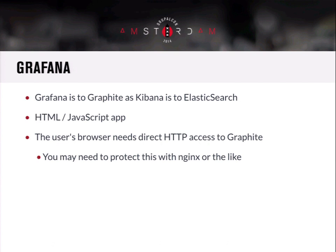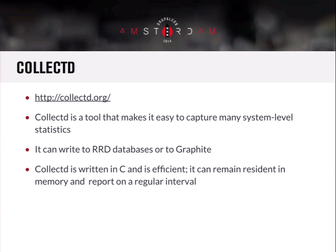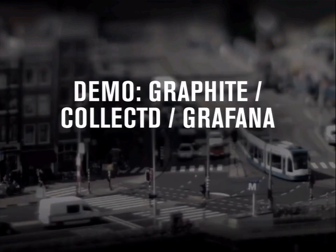Similarly to Kibana — the fully Angular frontend for Logstash — there's Grafana for Graphite or InfluxDB setups. As long as you have direct HTTP access to the Graphite API, you can get that information. CollectD is a great tool for keeping track of all sorts of system statistics — it's written in C, quite efficient, with plugins written in a variety of languages, and can remain resident in memory tracking things like system load and network usage.